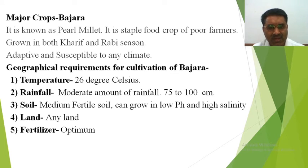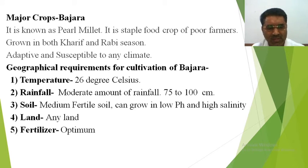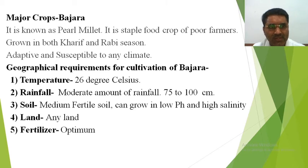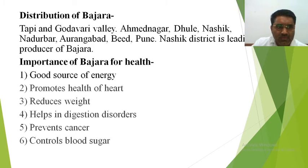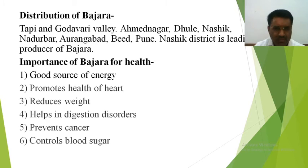Even if the soil is not very fertile or enriched, bajra can still grow, which is helpful for farmers. Any land is suitable — even where there is undulation, low soil depth, or no irrigation facility. No specific type of fertilizer is required; only an optimum level of fertilizers needs to be maintained by the farmers for bajra to grow well.